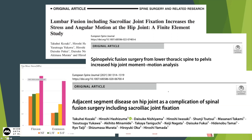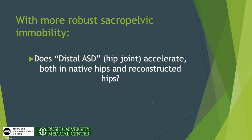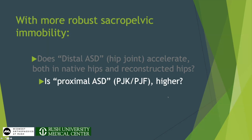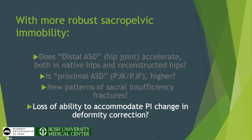With more robust sacropelvic immobility — if you really get the SI joint to stop moving in a deformity setting — maybe your hip joint disease accelerates, in both native and reconstructed hips. There may be instability issues we need to think about, and these are totally unknown areas for future study. Will PJF — acute failure of the upper instrumented vertebra — get worse? Are we going to see new patterns of sacral insufficiency fractures? Maybe when you do a big deformity case, you really need that SI joint flexibility to accommodate a pelvic incidence change.